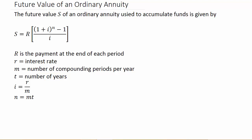In this video we're going to take a look at future value of an ordinary annuity. The future value S of an ordinary annuity used to accumulate funds is given by S equals R times (1 plus i) to the N minus 1, over i. R is the payment at the end of each period. Little r is the interest rate, and you don't see little r or m directly in the formula, but we'll get there.